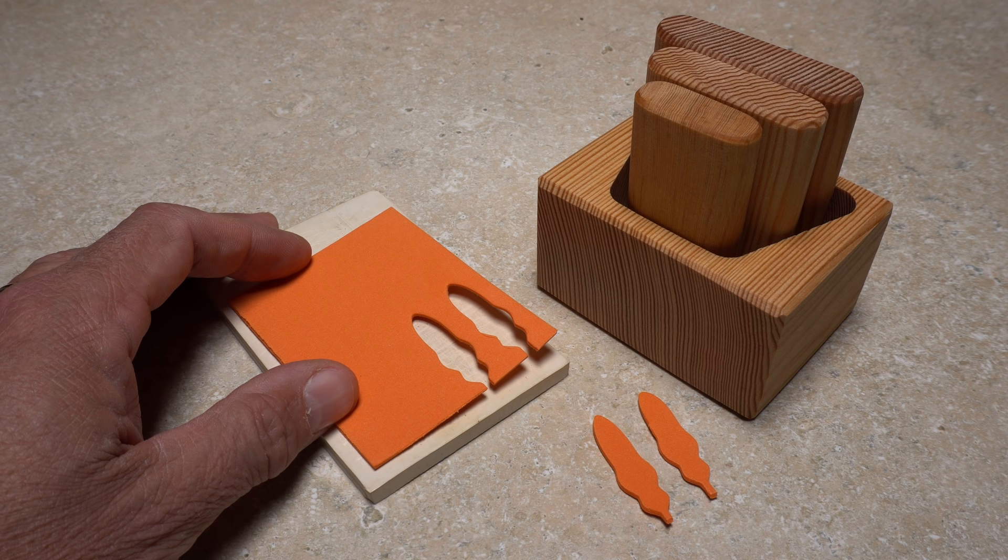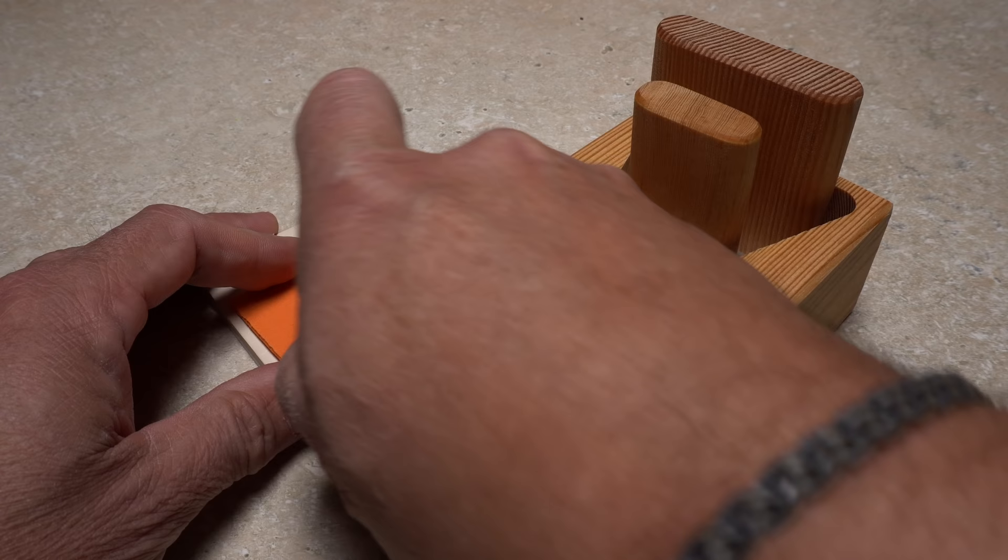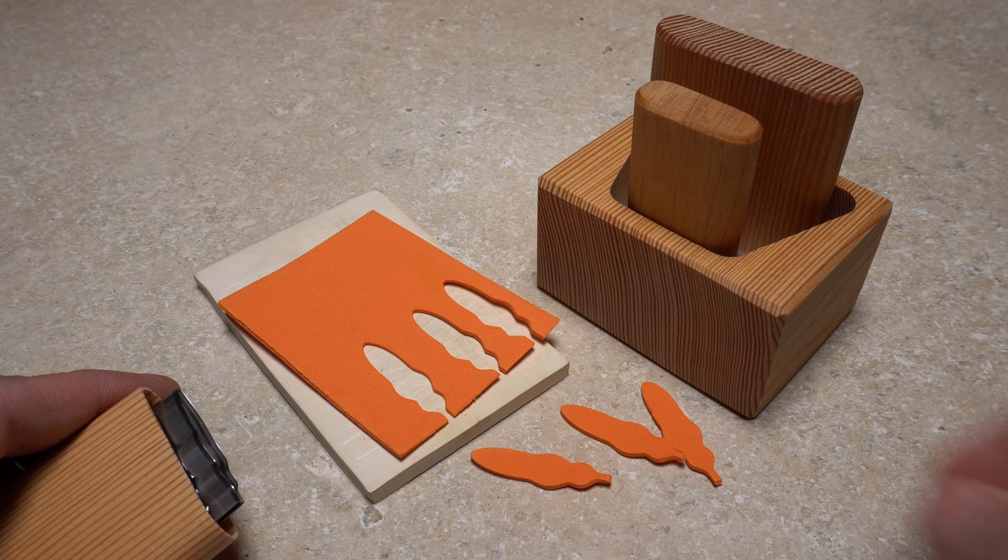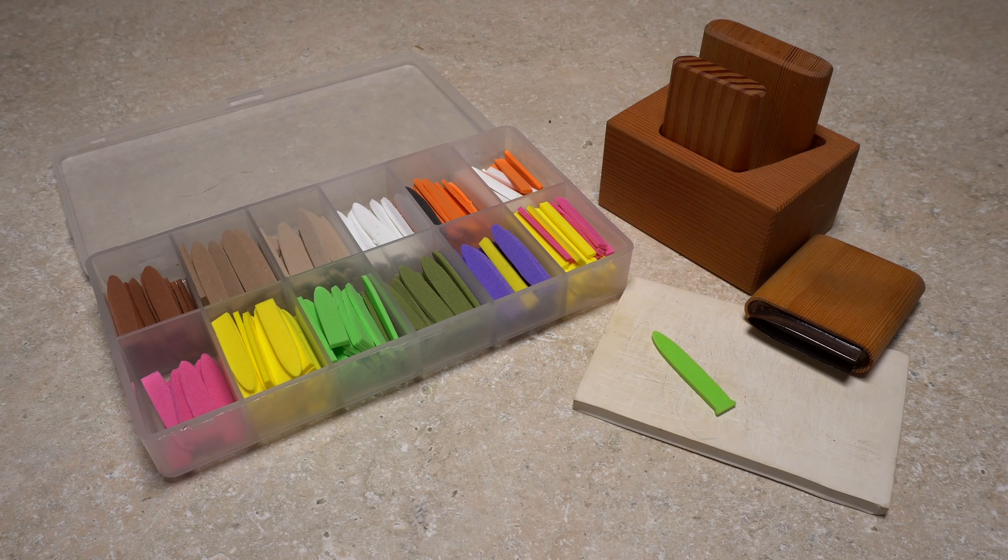Although you can cut sheet foam into various shapes with scissors or a hobby knife, specialized cutters such as those from River Road Creations make the job much easier and help produce more professional looking flies. Simply press down on the foam with the razor sharp blade and you end up with a perfectly shaped and repeatable foam form.